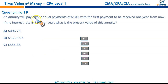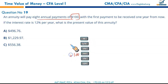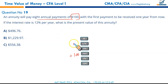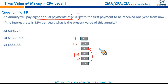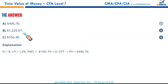Question 19: an annuity will pay eight annual payments of $100 with the first payment one year from now — ordinary annuity — at 12% per year. What is the present value? N = 8, I/Y = 12%, PMT = $100, FV = 0 — compute PV. Result is $496.76. A is the result.